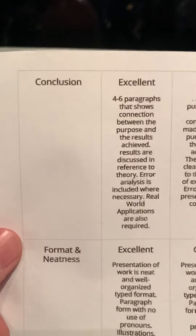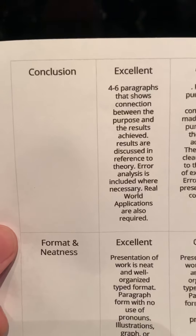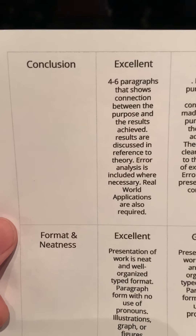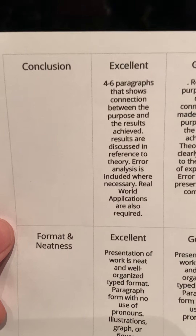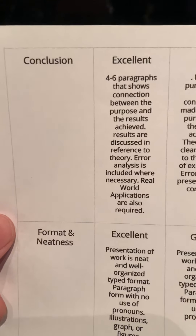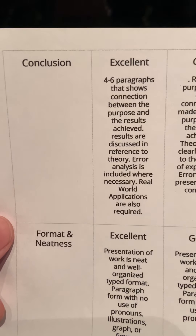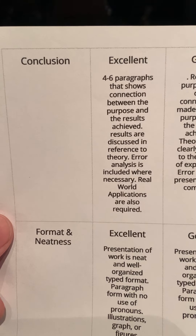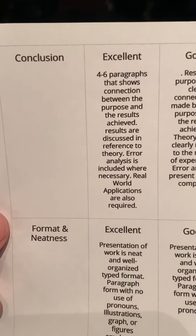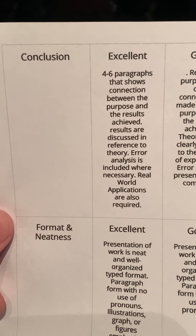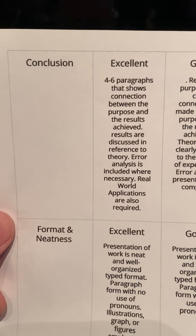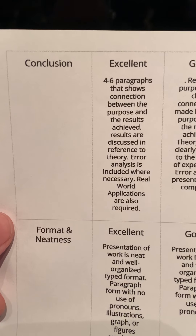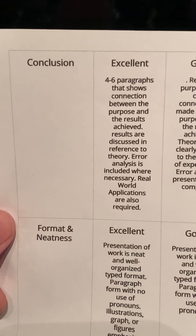Once we're done with the data and calculations section, we move on to the conclusion section. I've spelled out more specifics for you this time to help some of you along. Four to six paragraphs should show the connection between the purpose and the results achieved. You can connect back to your objective or your hypothesis. You want those discussed in reference to theory — it might be that we're talking about specific heat, or accuracy and precision, or whatever those bold terms were in our lab manuals. Those are your theory references that you need to explain.